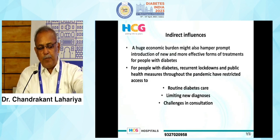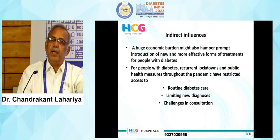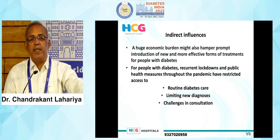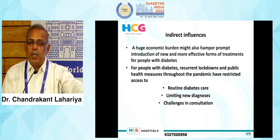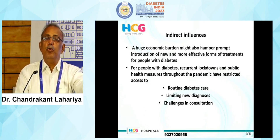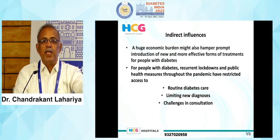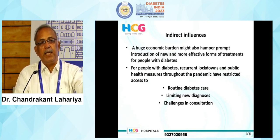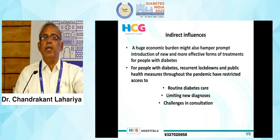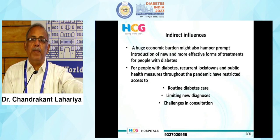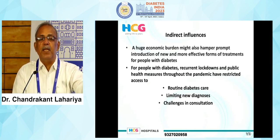There were indirect influences where there was disruption in routine diabetes care. Patients who did not have access to even a weighing scale or glucose sticks had lots of problems. In the USA, test strip availability became a huge problem because it was under medi-claim, and therefore many patients could not do SMBG and ultimately landed in the emergency with hyperglycemia.